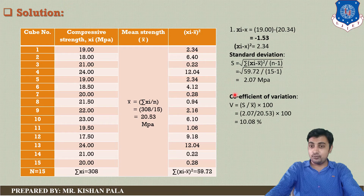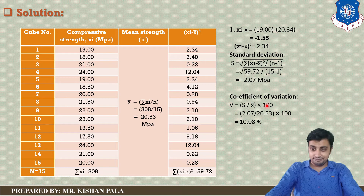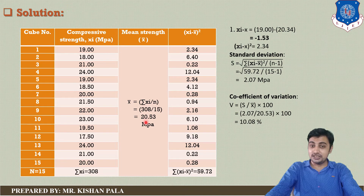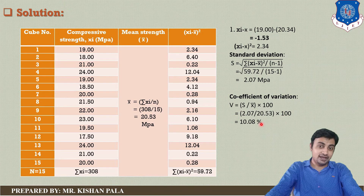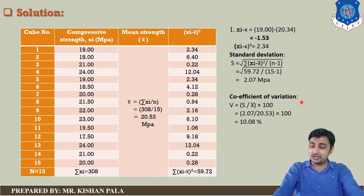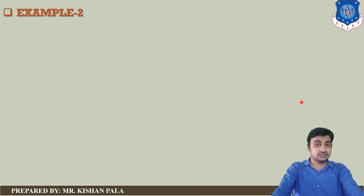Next, find the coefficient of variation: v equals (s divided by x-bar) multiplied by 100. With s equal to 2.07 MPa and x-bar equal to 20.53 MPa, we get a coefficient of variation of 10.08% for this batch. This concludes the first example based on statistical quality control of concrete. Let us now discuss the second example.